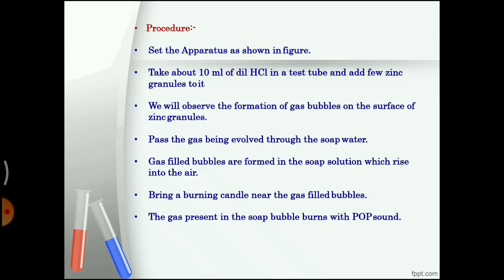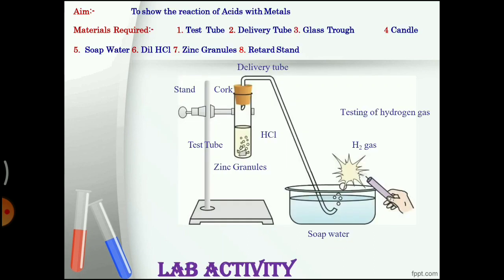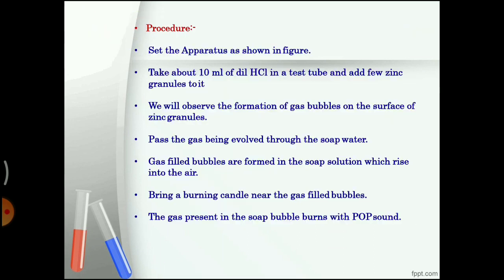Procedure: Set the apparatus as shown in the figure. Take about 10 ml of dilute HCl in a test tube and add a few zinc granules to it. We will observe the formation of gas bubbles on the surface of the zinc granules. Pass the gas being evolved through soap water using a delivery tube. Gas-filled bubbles are formed in the soap solution which rise into the air. Bring a burning candle near the gas-filled bubbles.